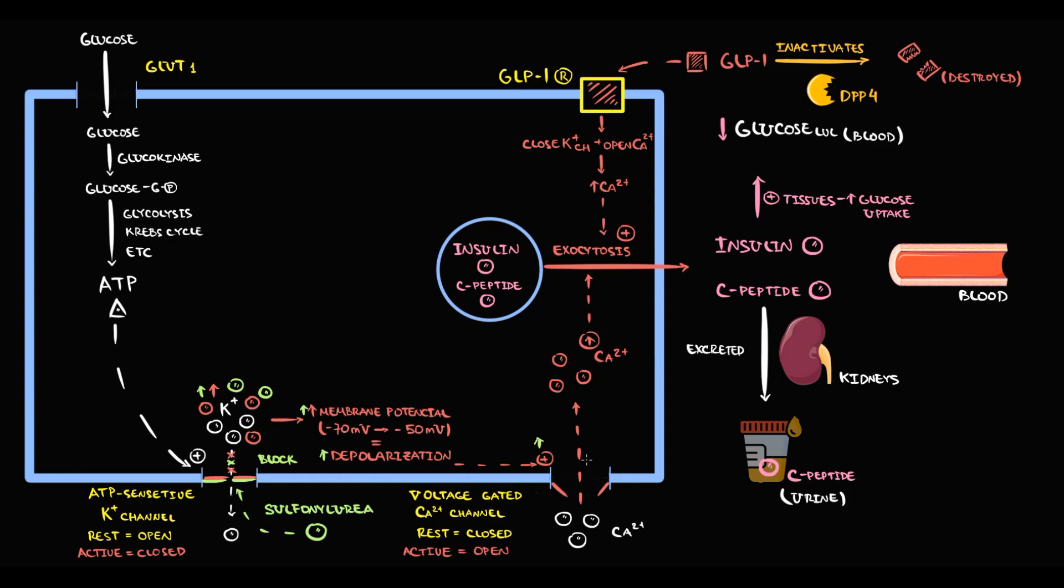Increasing depolarization causes additional opening of calcium channels. This allows more calcium ions to enter inside the beta cell. And with increasing intracellular calcium, exocytosis of insulin and C-peptide into the blood increases. Increasing insulin stimulates tissues to uptake more glucose from the blood. As a result, blood glucose level decreases.